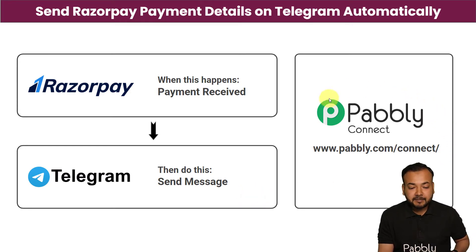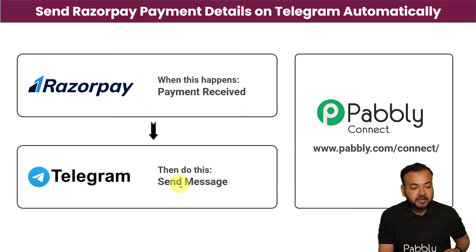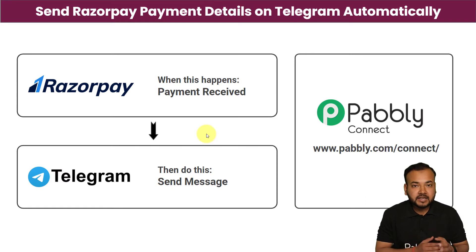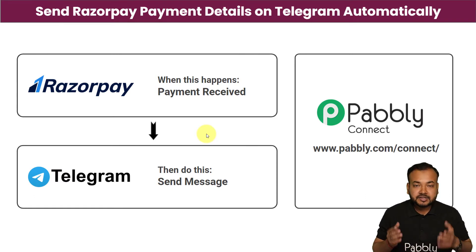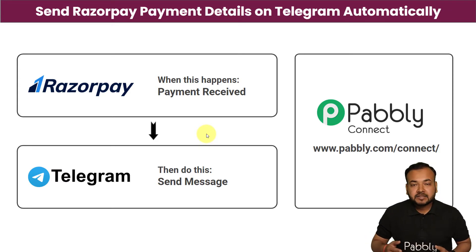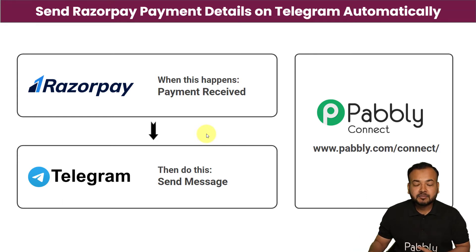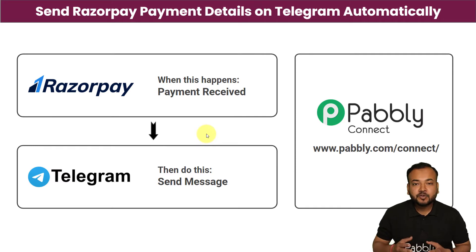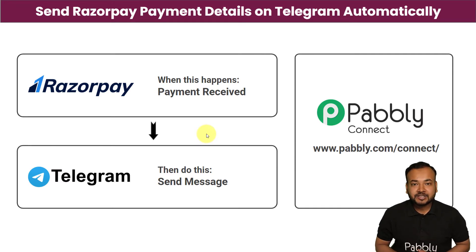We are using Pabbly Connect to make the connection between Razorpay and Telegram. With the help of this automation you don't have to manually copy-paste the data of payments you're receiving via Razorpay and compile a message one by one for every payment to send to your team in Telegram. It is going to save a huge amount of time and energy and improve your productivity as well.